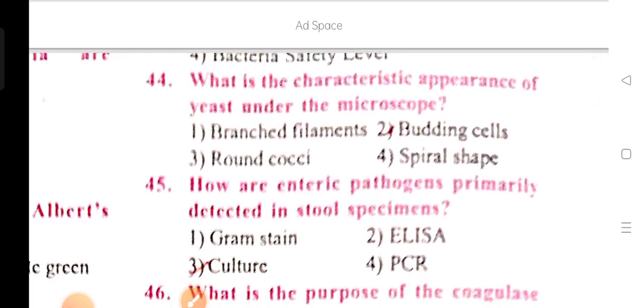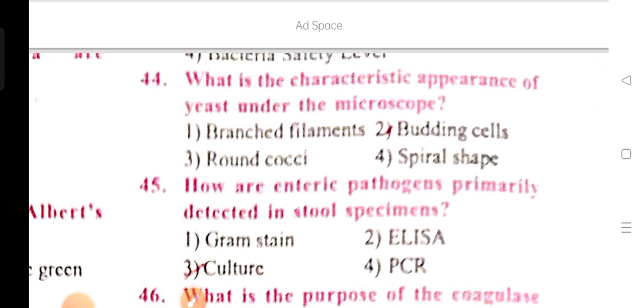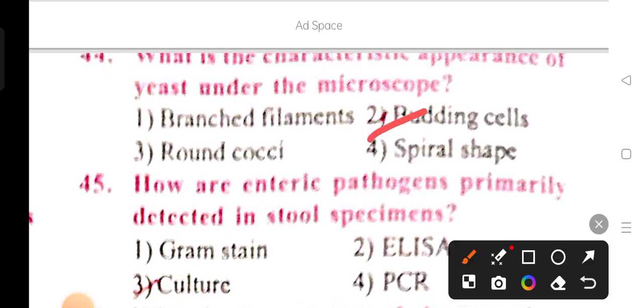What is the characteristic appearance of yeast under the microscope? What are the characteristics and appearance of yeast under the microscope? The options are branched filaments, budding cells, round cocci, and spiral shape. Option 2 is the correct answer: budding cells. The budding cells are how we can identify the appearance of yeast under the microscope.